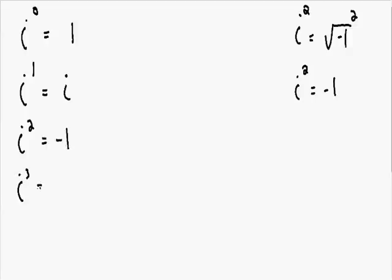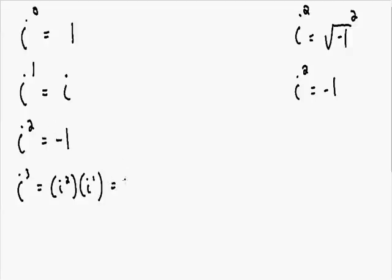Now let's say we have i to the third power — i cubed. We know that i cubed equals i squared multiplied by i to the first power, since 2 plus 1 equals 3. We know i squared equals negative 1, so we replace i squared with negative 1. And i to the first is just i. So negative 1 times i is equal to negative i.